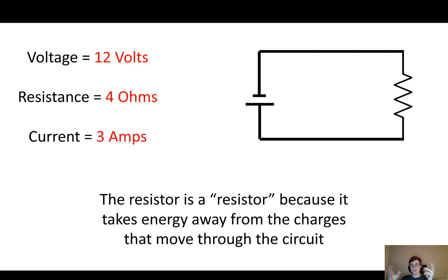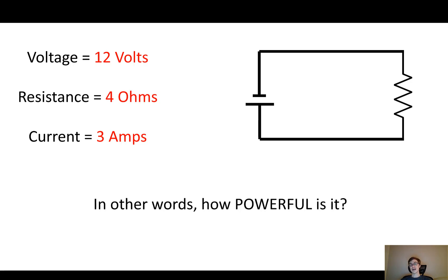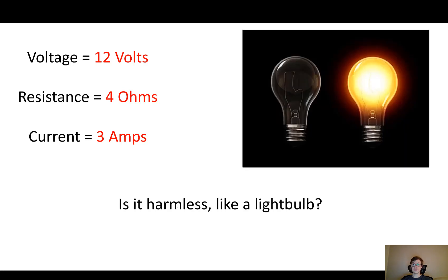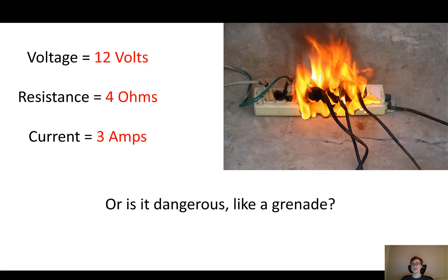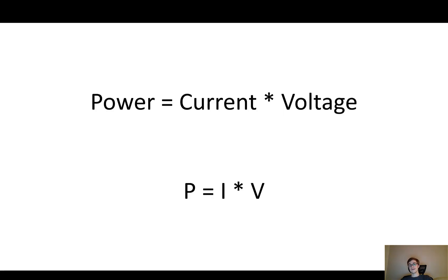The resistor is called a resistor because it takes energy away from the charges that move through the circuit — there's a voltage drop across it. But how fast is the resistor taking this energy? I want to know how powerful it is. Is it harmless like a light bulb — maybe just shooting out a little heat and light? Or is it dangerous like a grenade, or like an electrical fire, taking too much energy per second and releasing dangerous heat that could burn down your house?